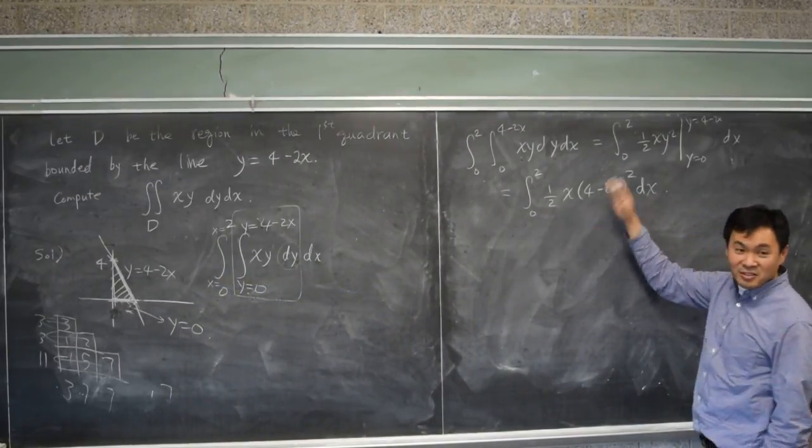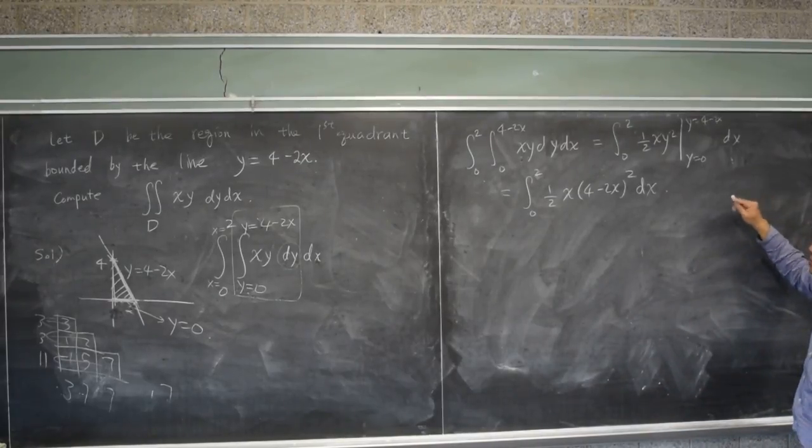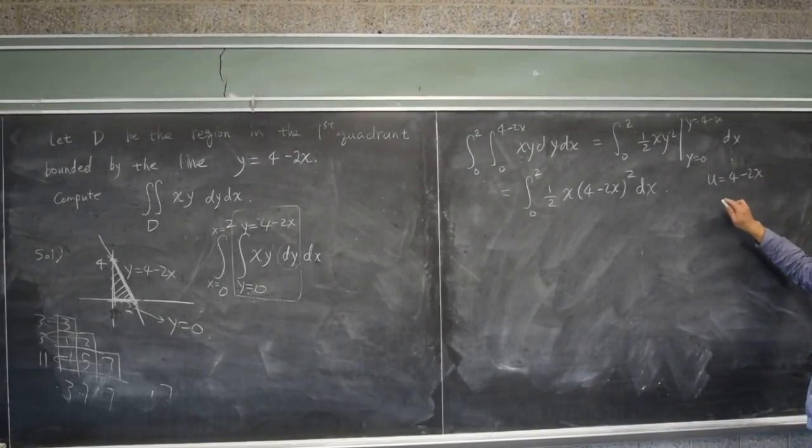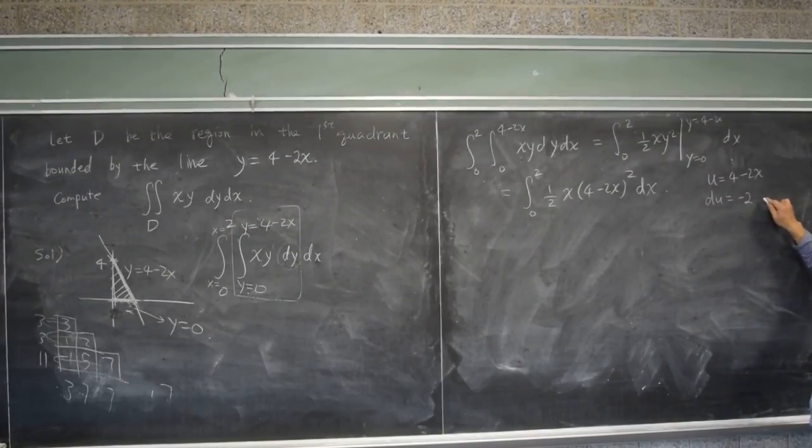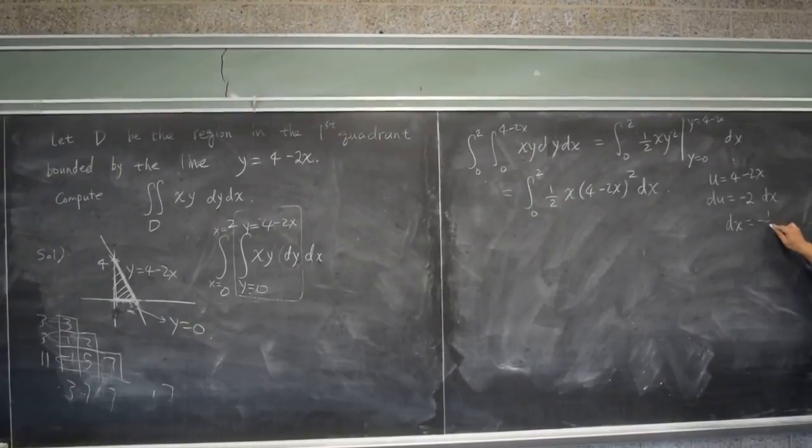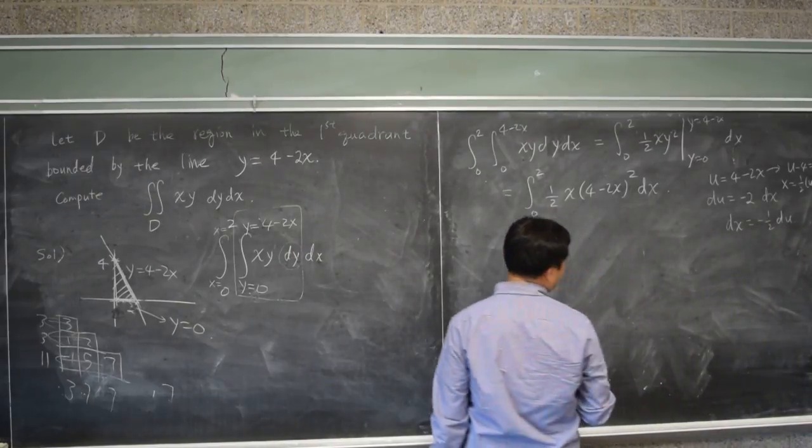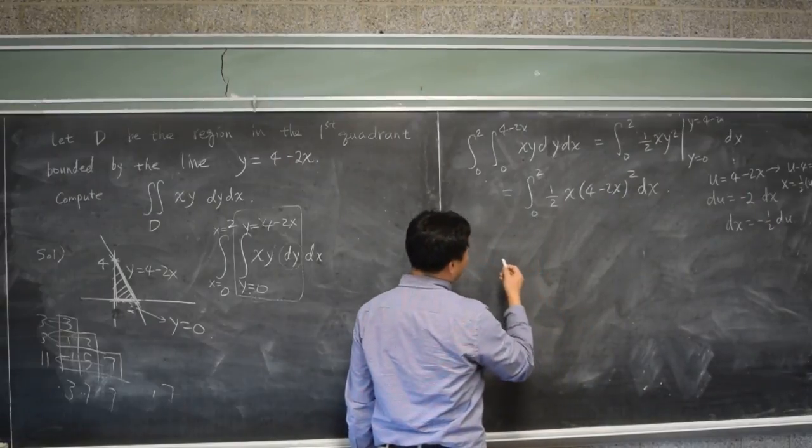I can just expand this and continue to calculate, but I don't feel like doing the work. So let me do a u substitution. Sometimes that's easier. So if u equals 4 minus 2x, then du is negative 2 times dx, right? So dx is equal to negative one half du. And also, if you solve this for x, what's that? u minus 4 is 2x. Therefore, x is one half of u minus 4. And it saves us a little bit of time. Maybe you don't like that.